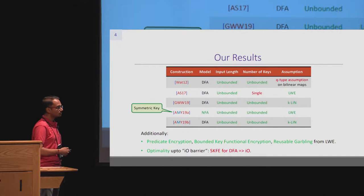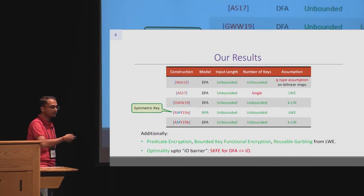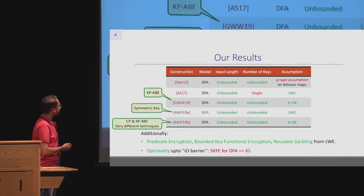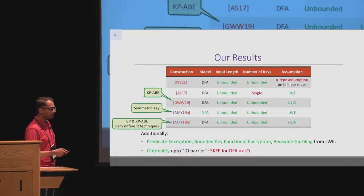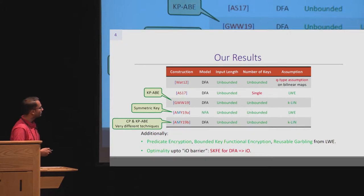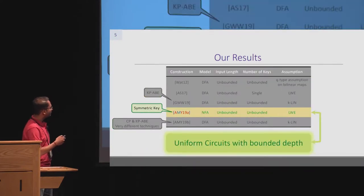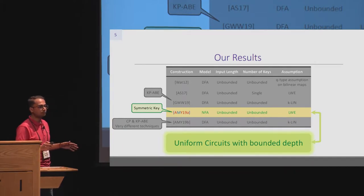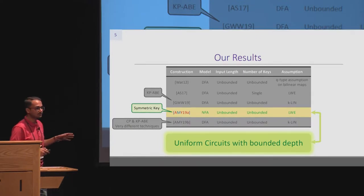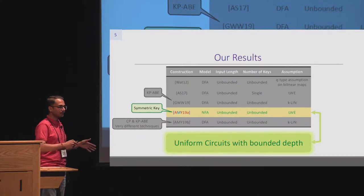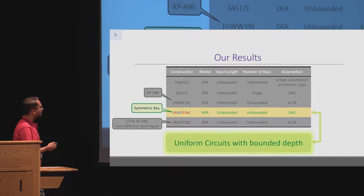We also have a concurrent work with Gong et al., and subsequent to our work, taking the techniques from our work, which constructs the same primitive for DFA based on the same assumption, but with very different techniques. While Gong et al. achieves key policy ABE, our techniques are generic and run in a modular fashion, which allows us to get both ciphertext and key policy ABE, and this will appear in TCC this year. Our construction doesn't only support NFAs, but also supports a generalized class of uniform circuits with bounded depth. NFAs are a particular instantiation of this class and are more practically relevant, so we will restrict our attention to NFAs for this talk.